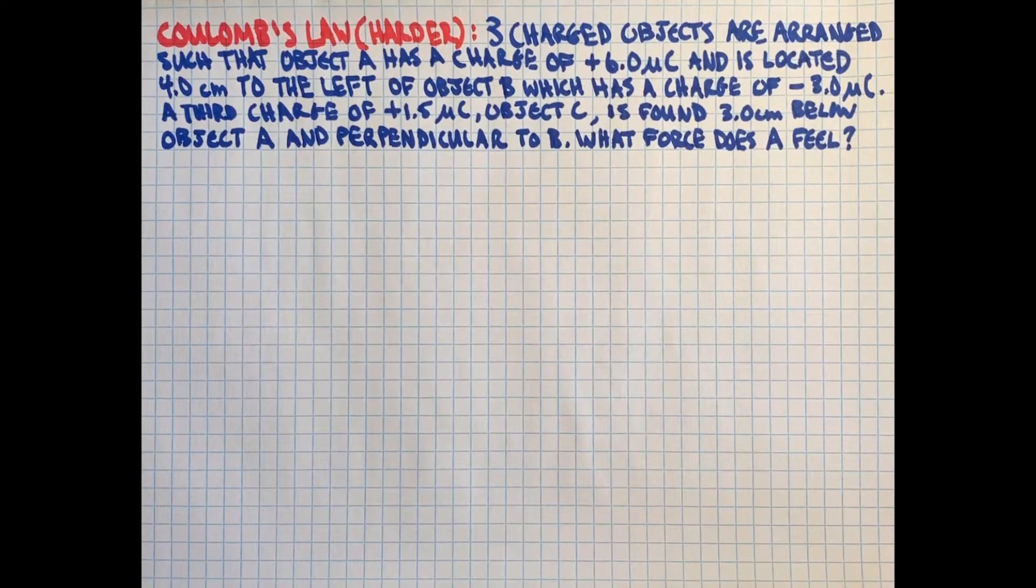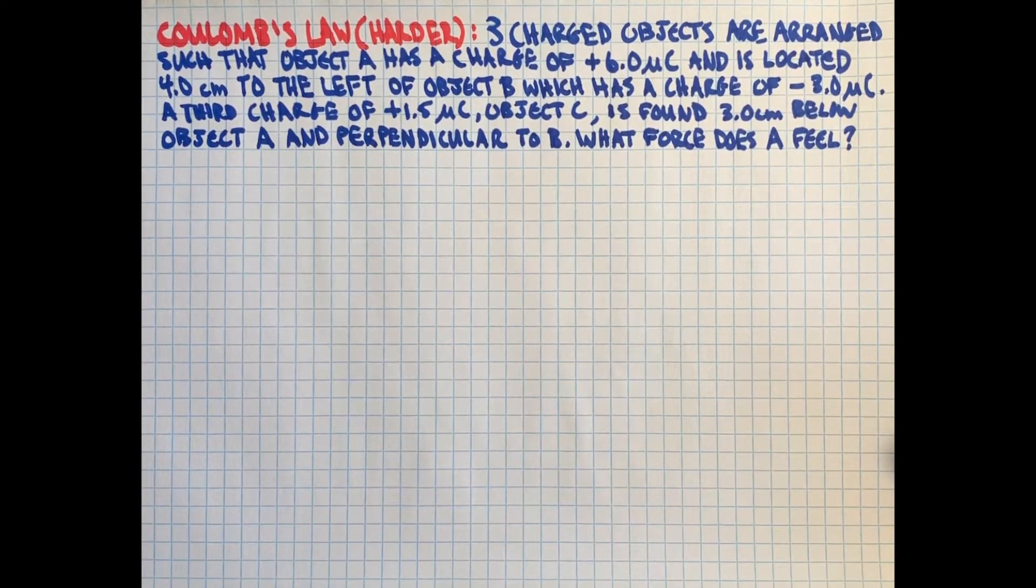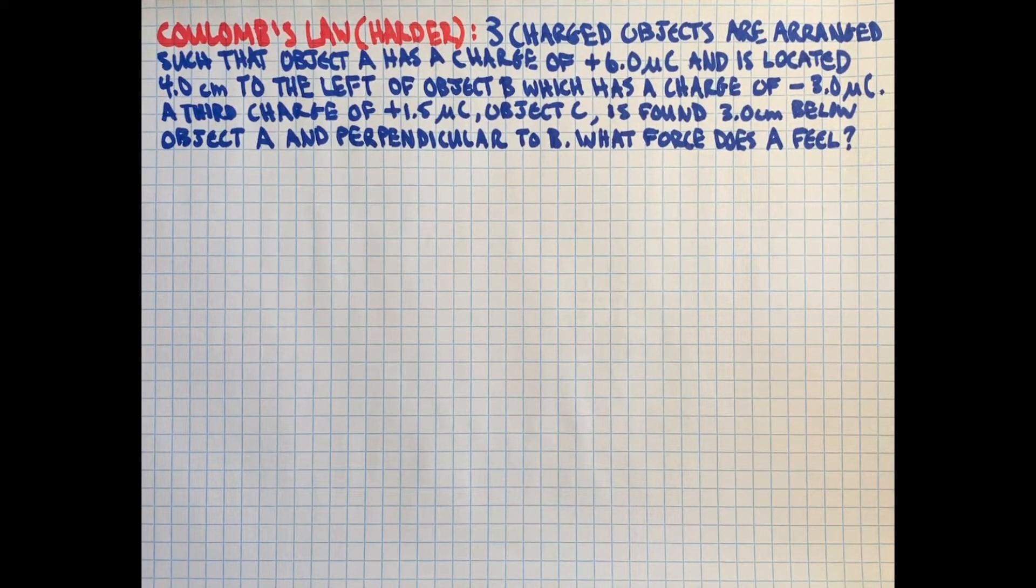Alright, that was a long one just to write out. This is going to be our first two-page video here, so we're at a real milestone. This is another example of a Coulomb's Law type question, and this one's a little bit harder than the last one, quite a bit harder to be honest, since this has three objects in it as opposed to only two. That's not as bad as you might think, but you're going to have to recall your vector addition here as well.